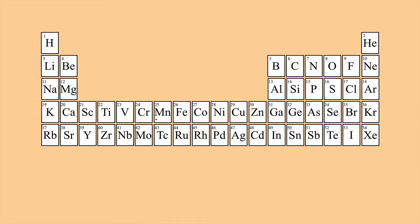Here's a partial periodic table. We're interested in zinc, which is element number 30. Let's write down the electron configuration for zinc. The last noble gas before zinc is argon, so we write argon in brackets. Then we have the 4S block and the 3D block — a full 3D block — so it's [Ar] 3d¹⁰ 4s².